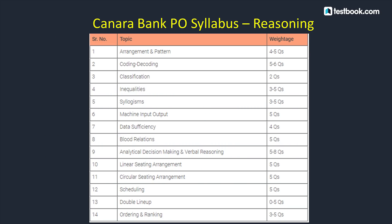Let's talk about Canara Bank's Reasoning syllabus. For series, you will have 4-5 questions covering alphabet, number, mixed series, or dictionary order arrangement and patterns. For Coding-Decoding, 5-6 questions covering letter shifting, coding and fictitious language, operation and place value, coding by analogy, and coding by words.